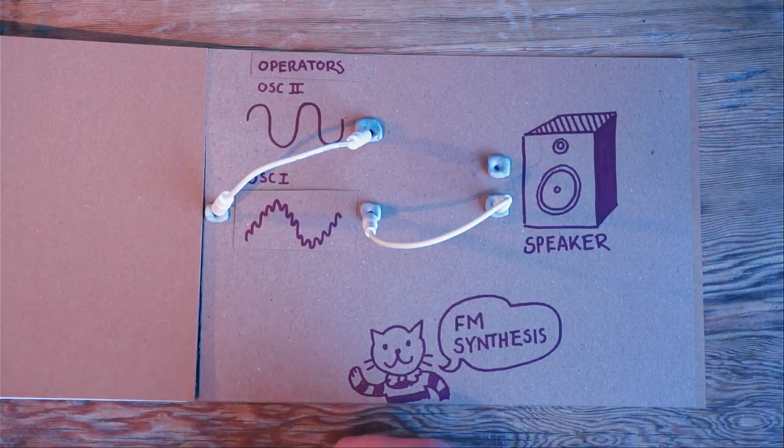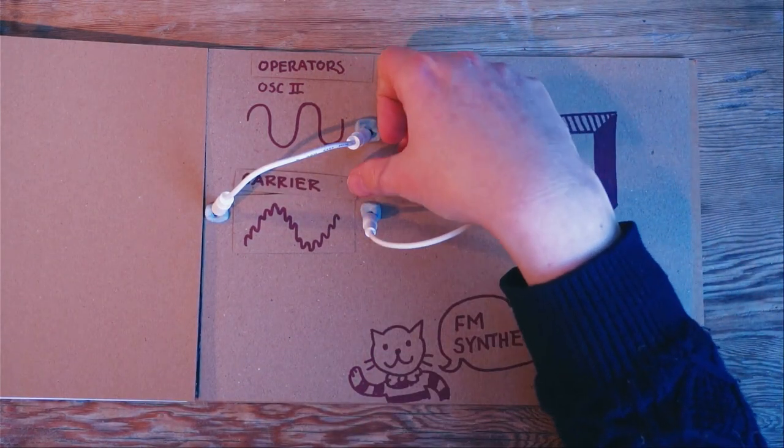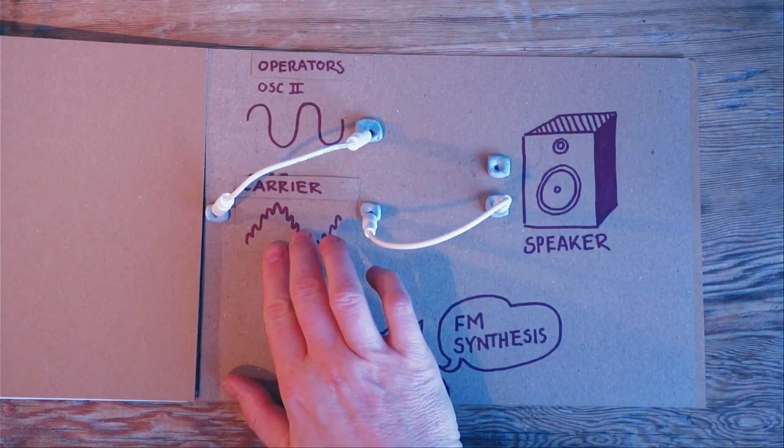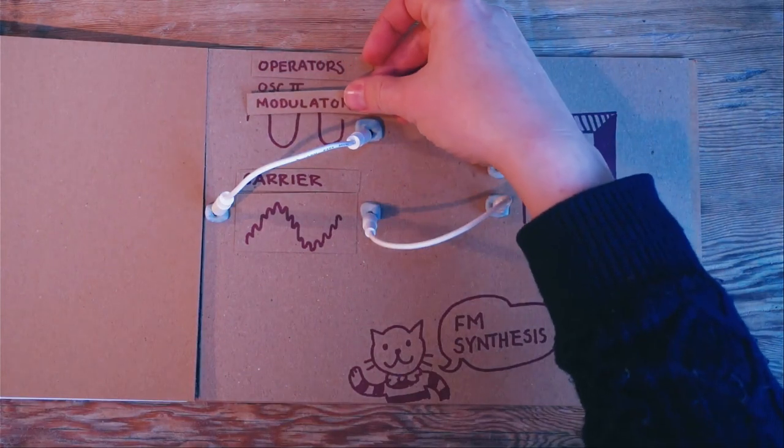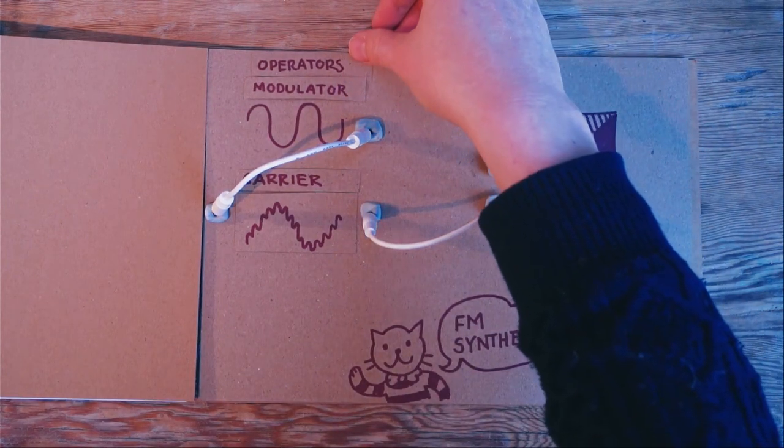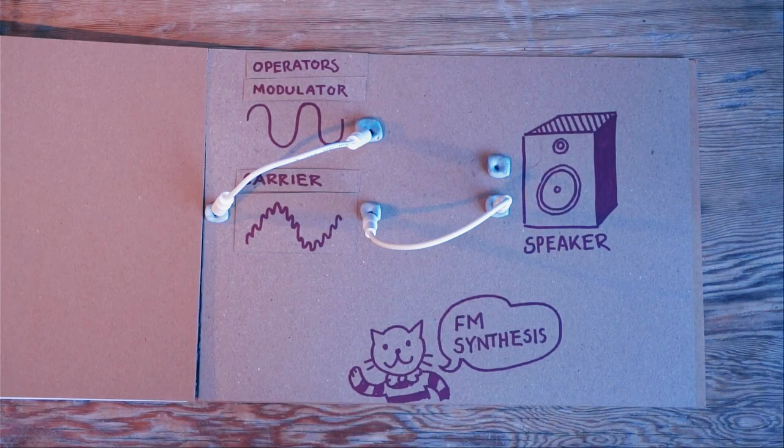There are two types of operators. One is the carrier, which is in this case, this one, that's the one you're hearing. And then there is the modulator, which is the one that is not connected to the output, but it is connected to the first waveform to make it wibbly wobbly.